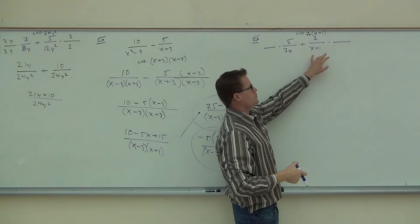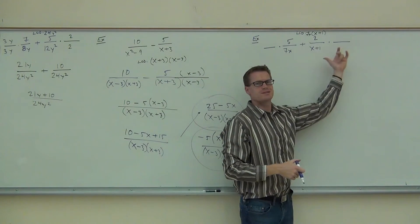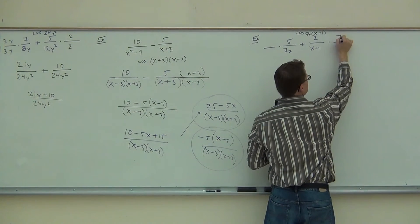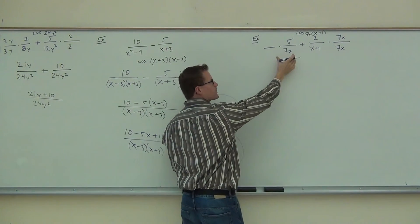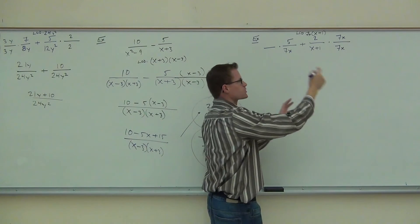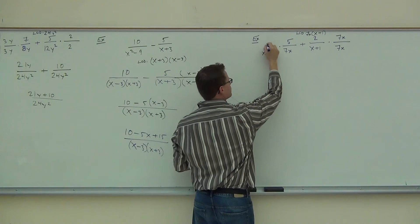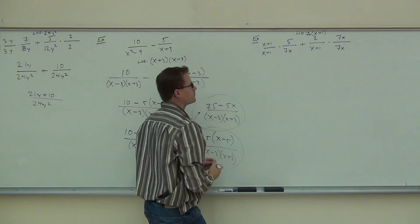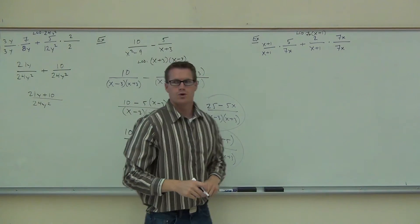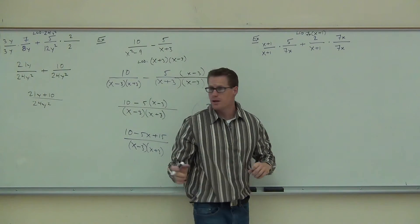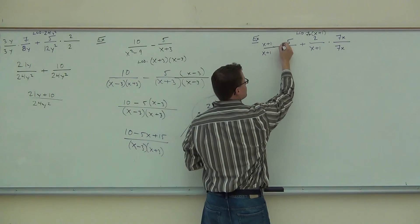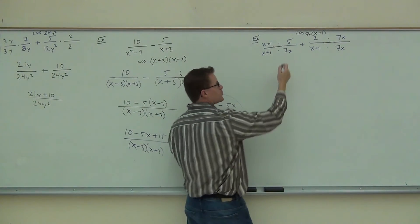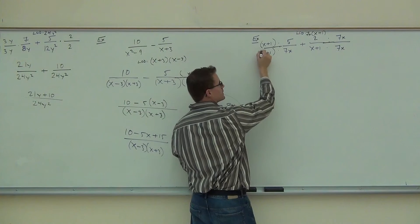On the right fraction, we have x plus 1. What are we missing? 7x. So that's going to be on both the numerator and the denominator. And over here, we already have the 7x but we don't have the x plus 1. We multiply fractions by extending the line, putting the dots, and making sure we have parentheses where appropriate.